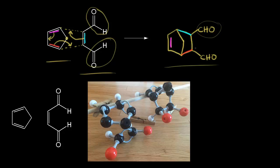So where are these aldehydes in space? How do they relate to this bridging CH2? Well, let's say the diene and the dienophile approach each other in this way. We know that a bond forms here in red between this carbon and this carbon, and for the product you can see that bond. We also have this bond in blue, which forms between this carbon and this carbon.